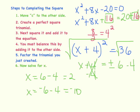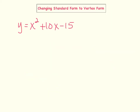Next, we are going to see how we can use the completing the square method to change the standard form of a quadratic equation into the vertex form of a quadratic equation. We are going to use the equation y equals x squared plus 10x minus 15. Because we want to solve for x, I am going to replace the y with 0, so now we have 0 equals x squared plus 10x minus 15.